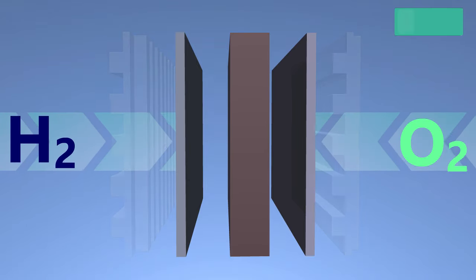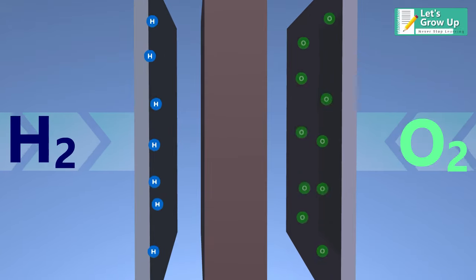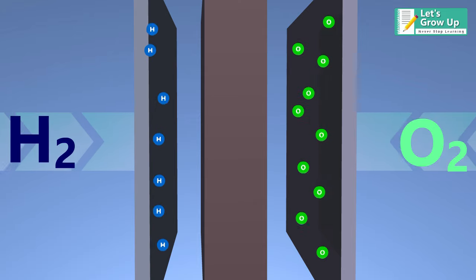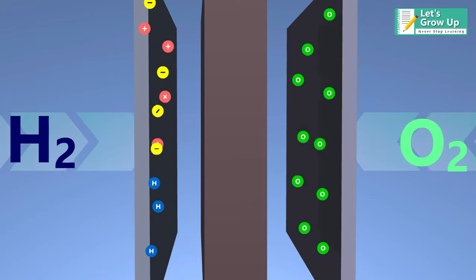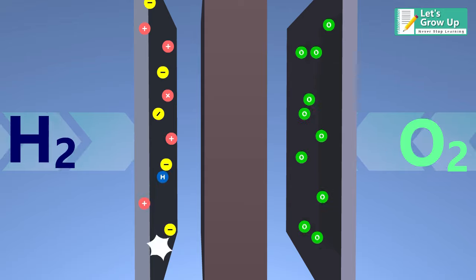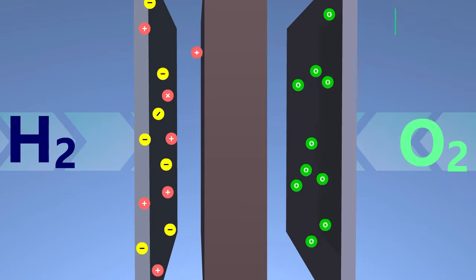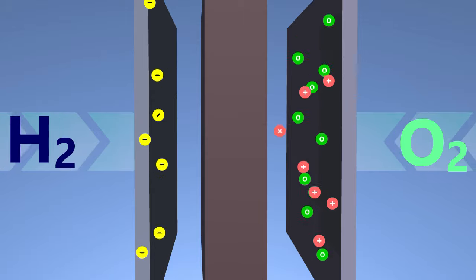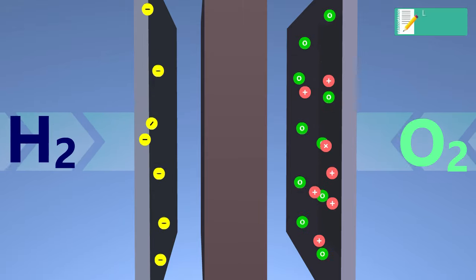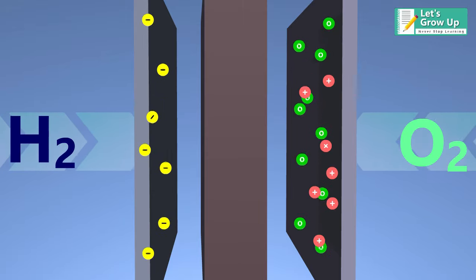At the anode, the hydrogen molecules are split into electrons and protons by a catalyst. The positive particles of hydrogen can pass through the membrane, but the negative particles cannot. However, atoms need an equalizing charge, and to achieve this, electrons must change their path.